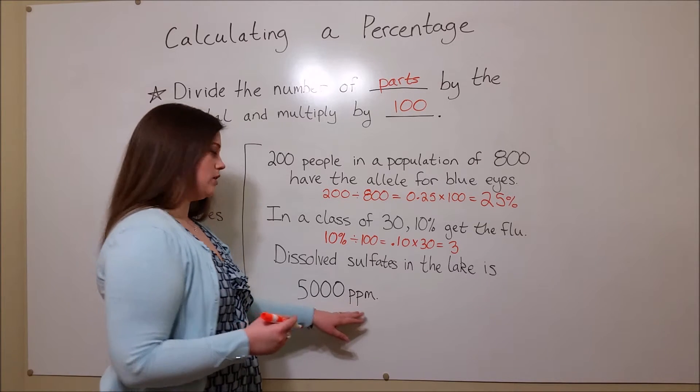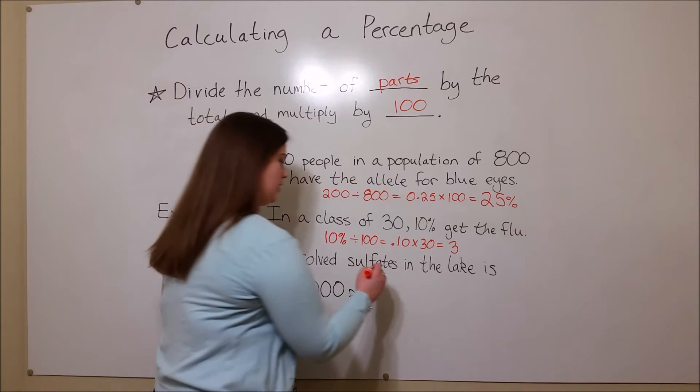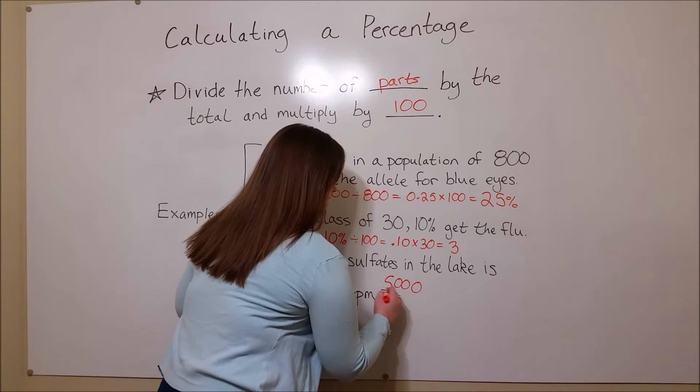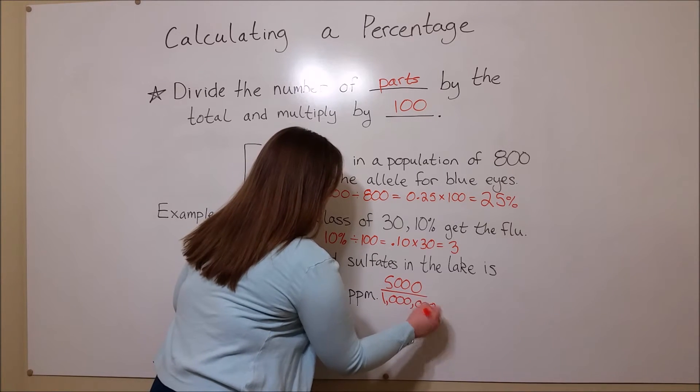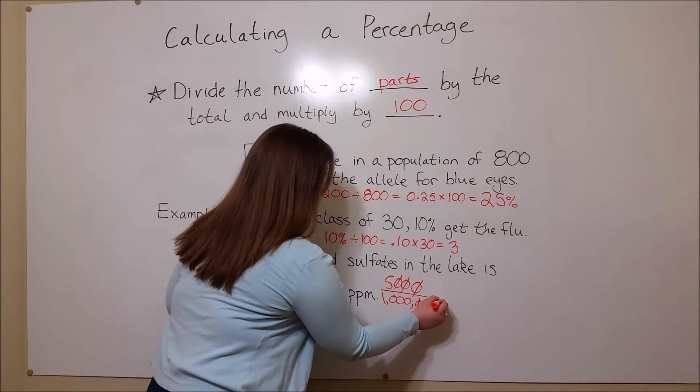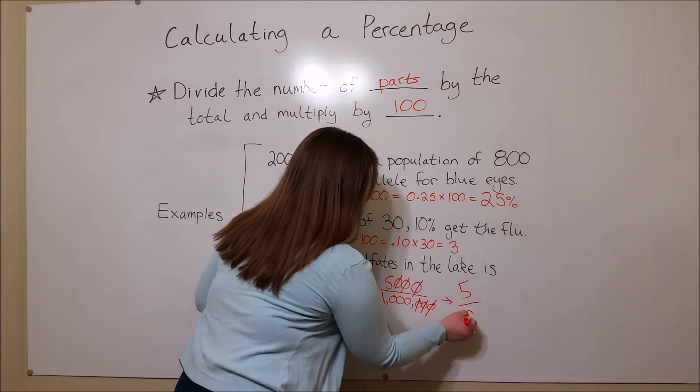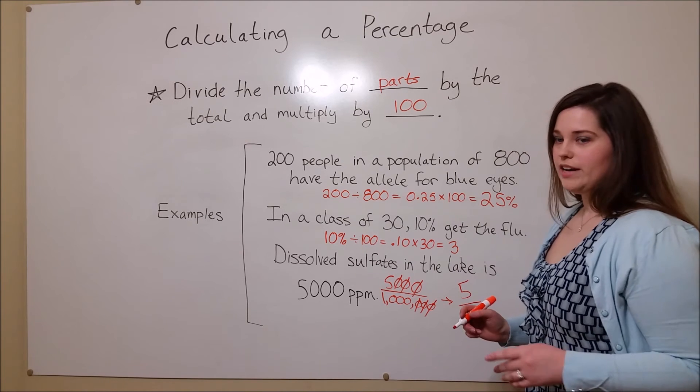Well, if it's 5,000 PPM, that is written like this, 5,000 over a million. We can cancel three zeros, and we're left with 5 divided by 1,000, which is equal to 0.5%.